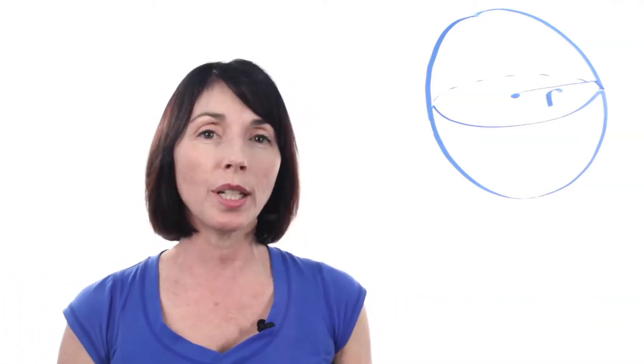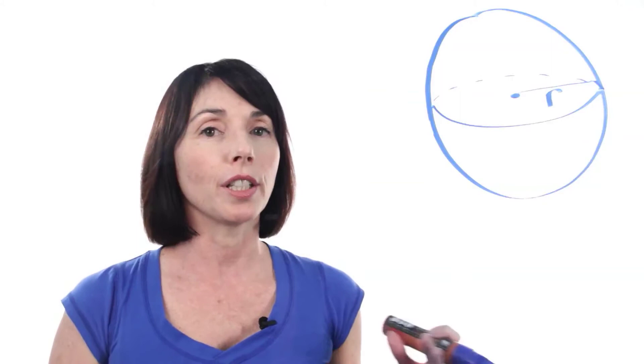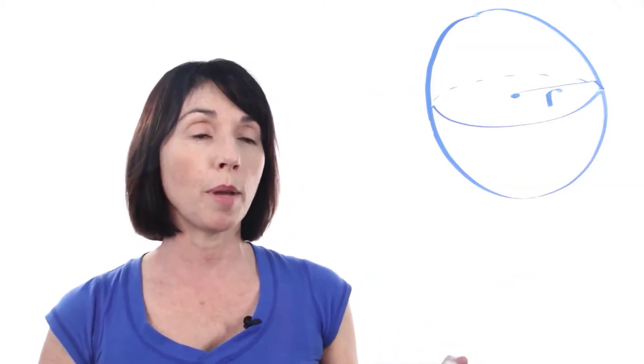A sphere is a three-dimensional object like a ball, and the volume measures the area inside. Now, like any calculation involving a circle or a sphere, you need to know the radius. The radius is just the measurement from the center point of the sphere out to any point on the edge, and we'll call that radius r.